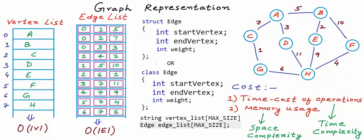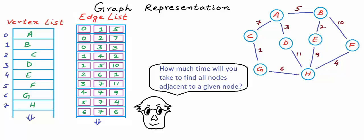Overall space complexity of this design is O(|V| + |E|). We cannot do much better than this if we want to store a graph in memory, so we are fine in terms of memory usage. Now let's discuss the time cost of operations. One of the most frequently performed operations when working with graphs is finding all nodes adjacent to a given node — that is, finding all nodes directly connected to a given node. What would be the time cost of this operation?